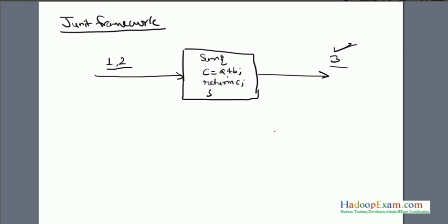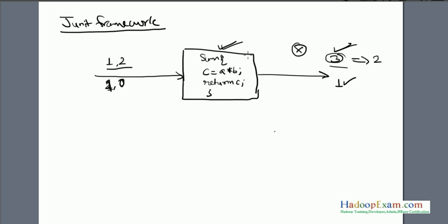Now suppose you pass 1 and 0, and the expected output is 1. But if someone made a mistake in the code — for example, using multiplication instead of addition — then passing 1 and 2 expecting output 3 would actually produce 2. The JUnit test case fails, meaning something is wrong with the code, the input, or the expected output. You then debug to find the issue.